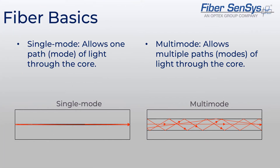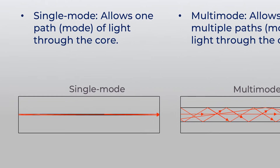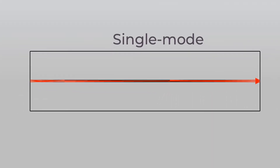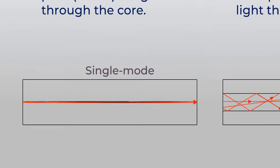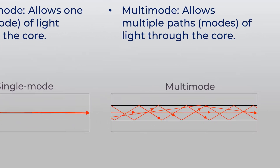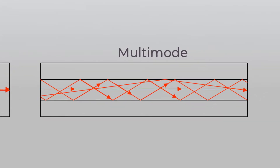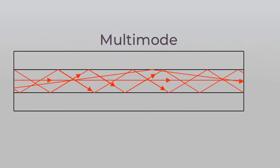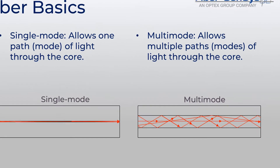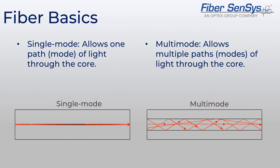There are two primary types of optical fiber: single mode and multi-mode. The small 9-micron core of single mode fiber allows it to carry light through one pathway, or mode, straight down the core. Multi-mode fiber has a larger core size, typically 50 or 62.5 microns, allowing it to carry multiple modes of light through the fiber core.